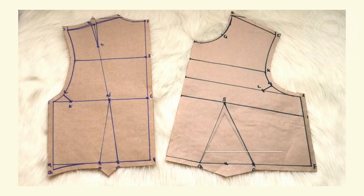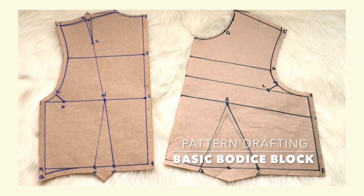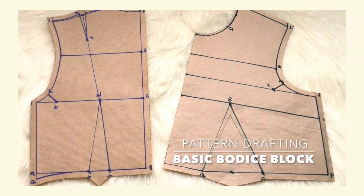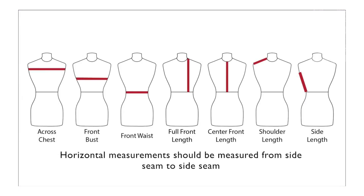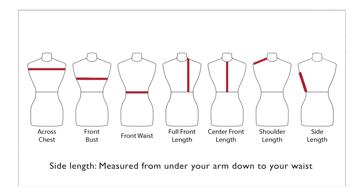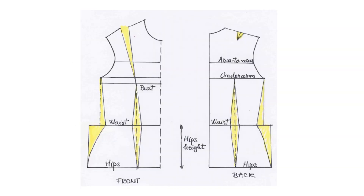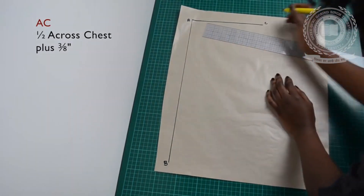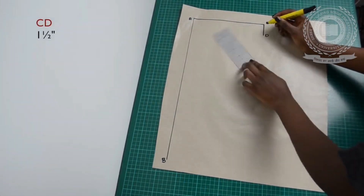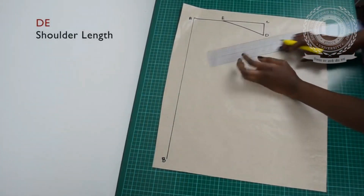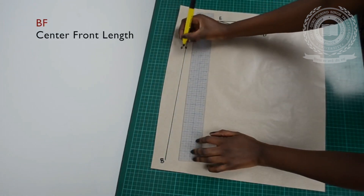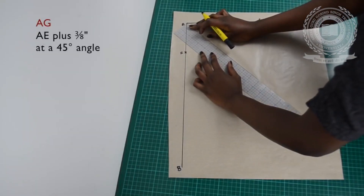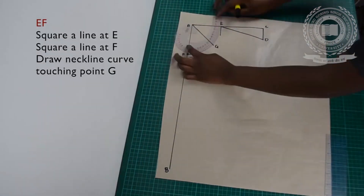Let's begin with the first method, which is drafting. This video shows you the basic bodice drafting. We require 7 body measurements for our basic bodice block. All horizontal lines should be measured from side seam to side seam. The side line is measured from under your arm down to your waist. AB is the full front length of the bodice. AC is half of the cross chest plus three-eighths of an inch. CD is one and a half inches. DE is the shoulder length. BF is the center front length. This line should be drawn at approximately a 45-degree angle.